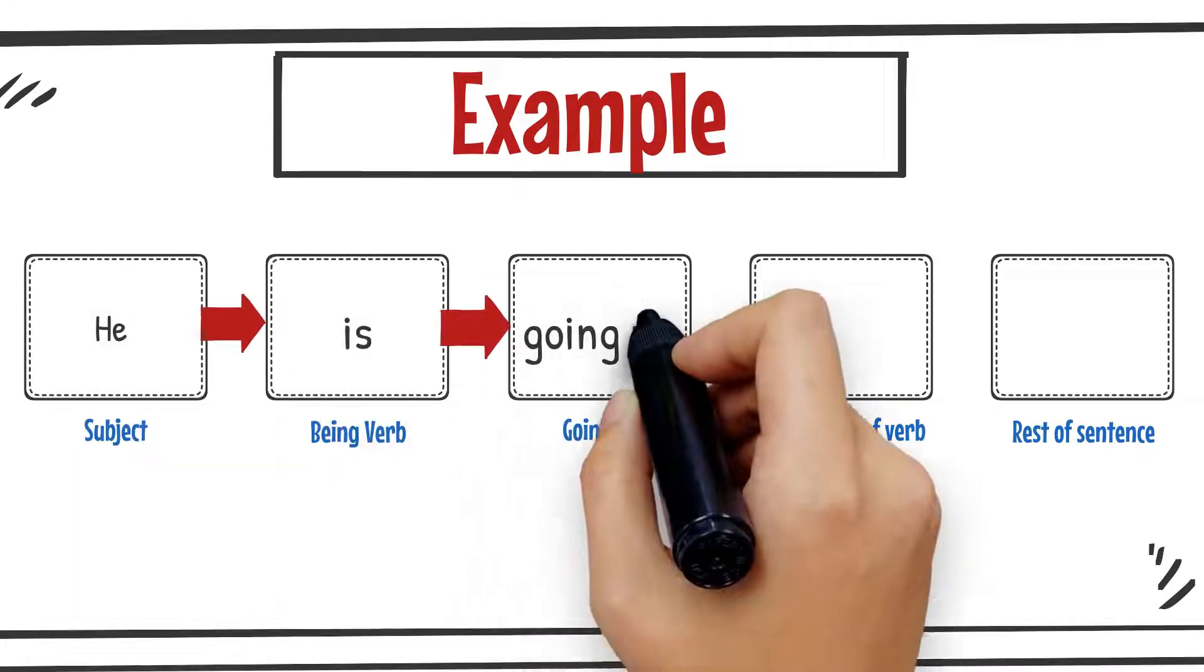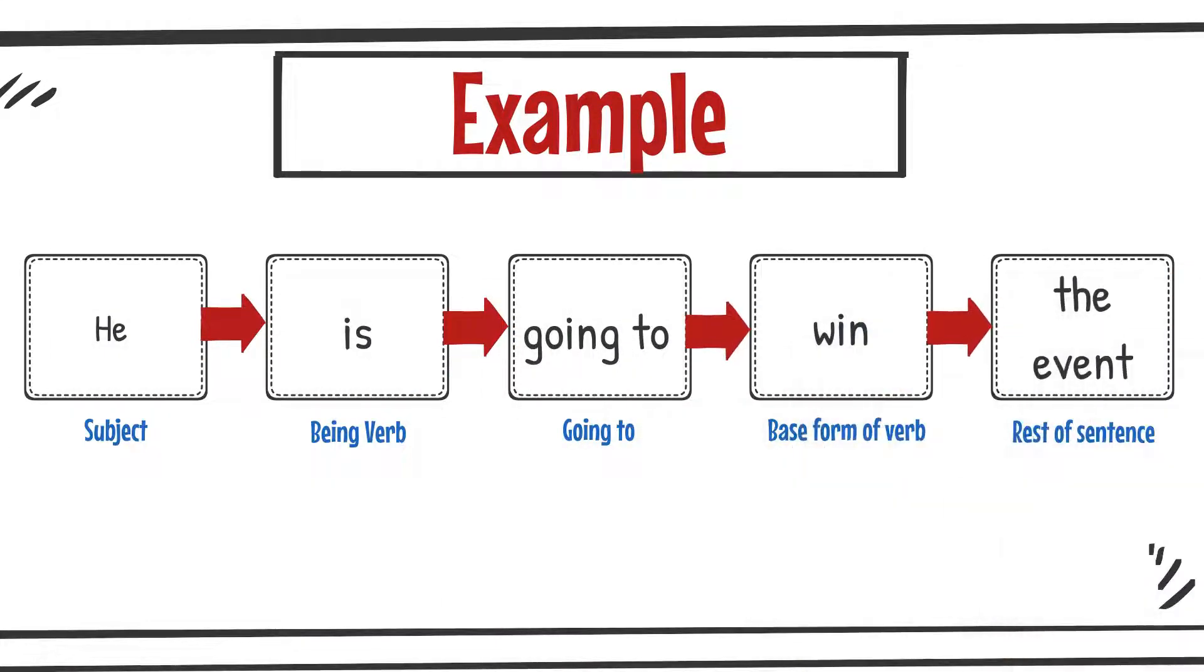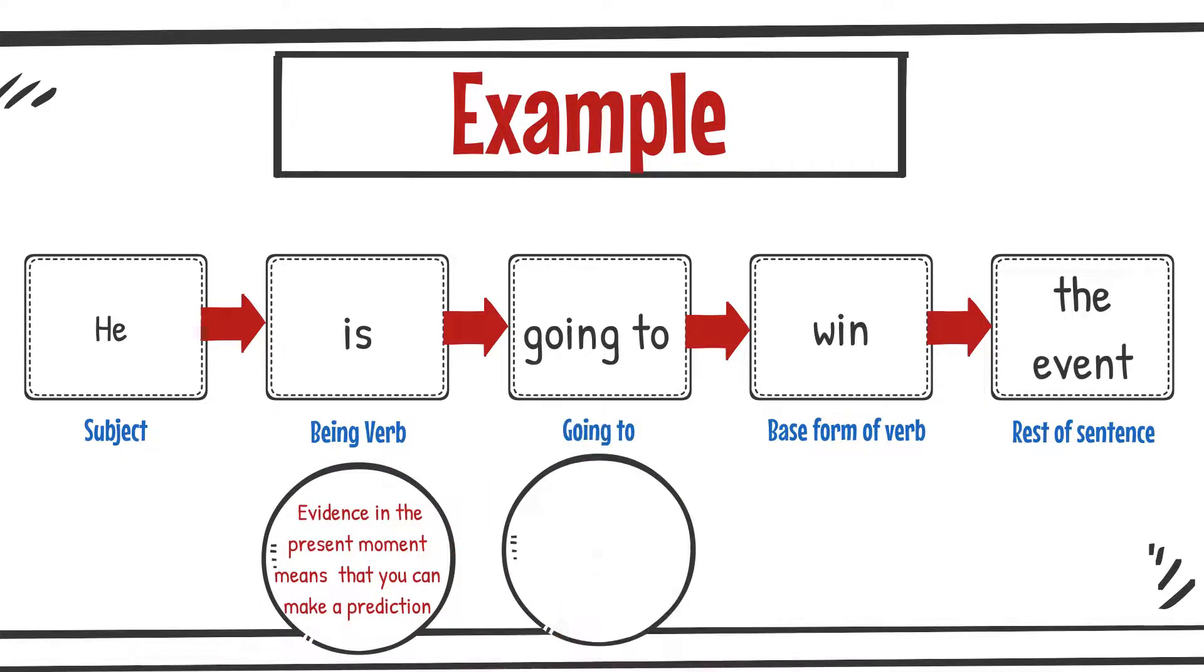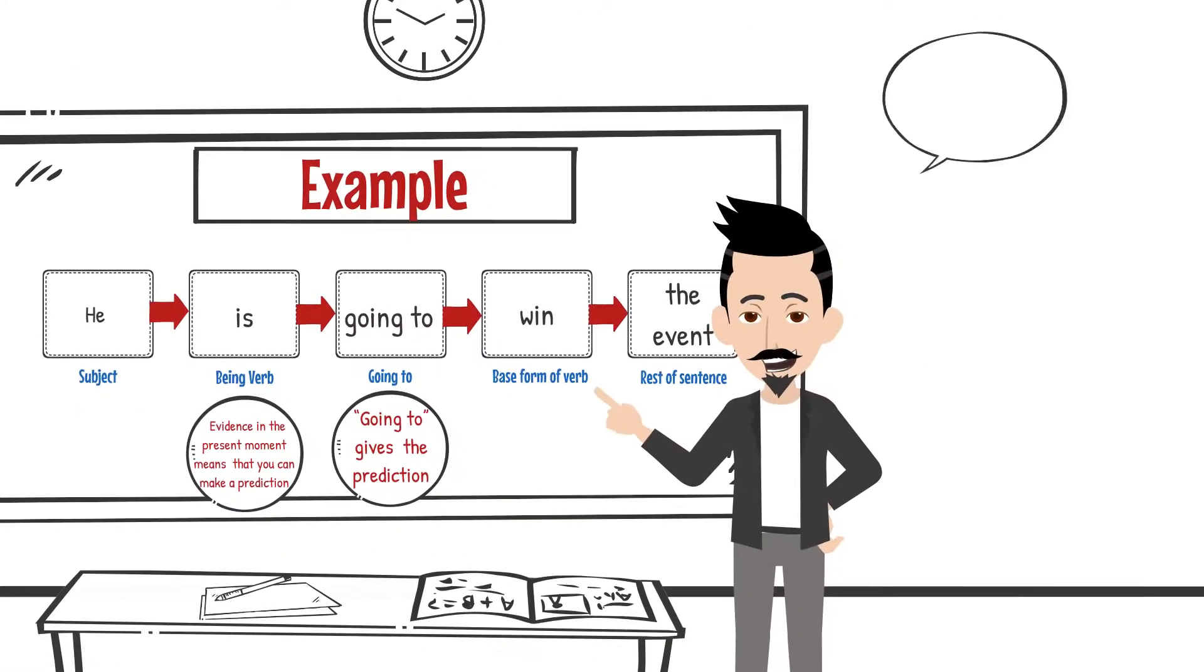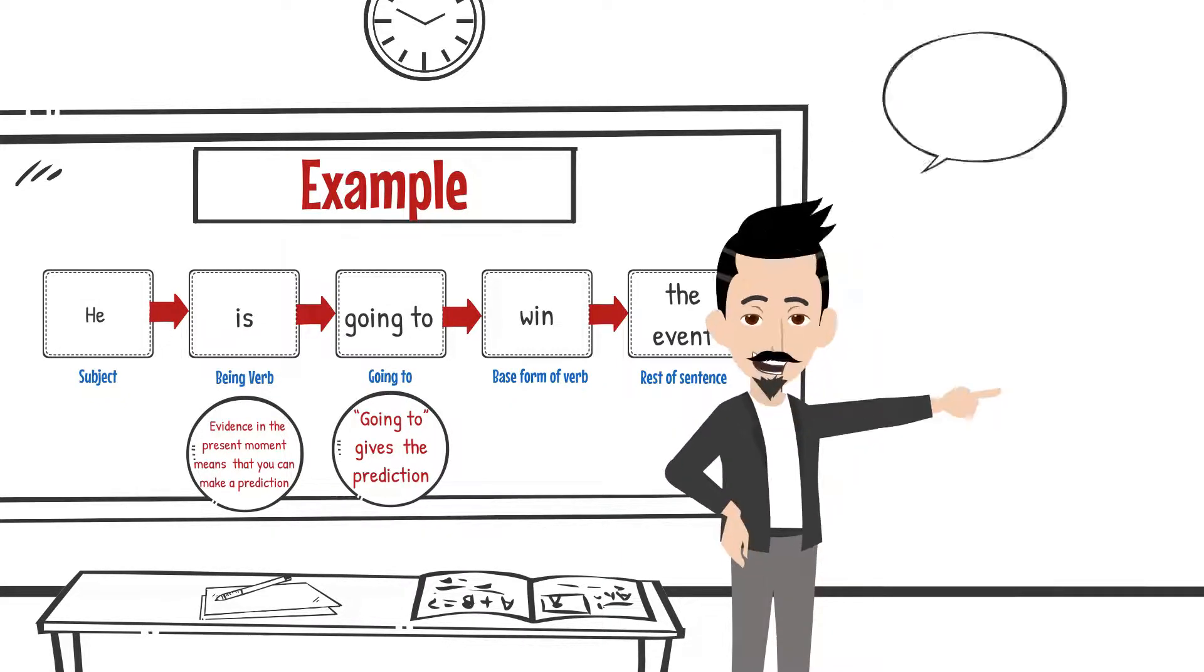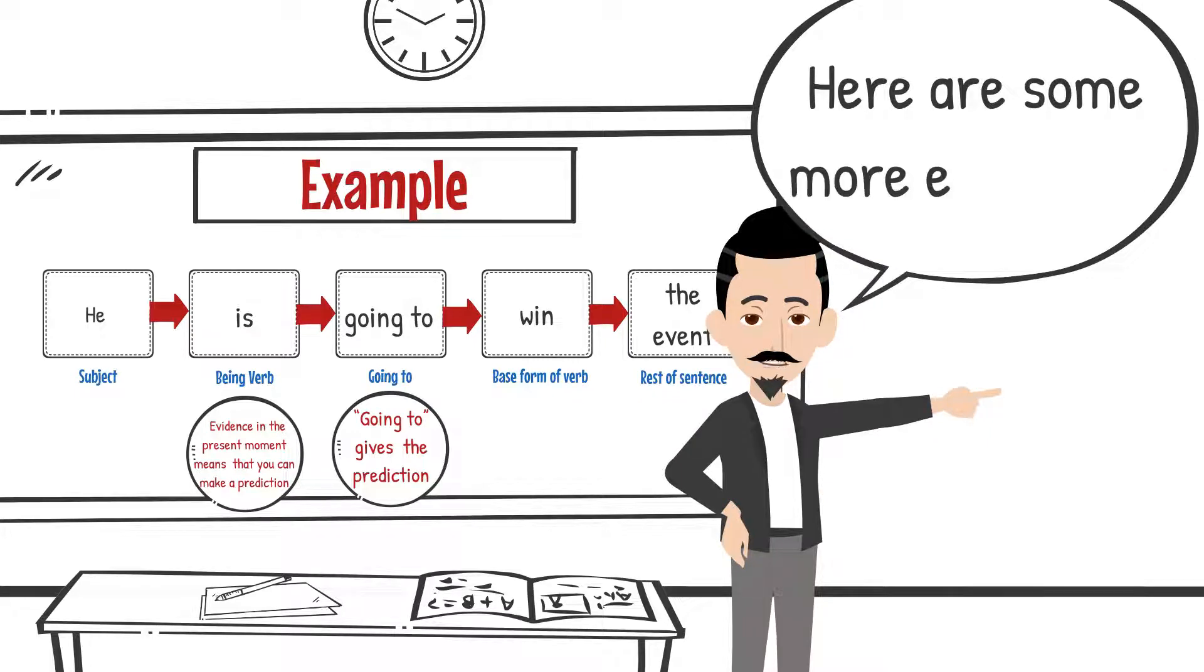He is going to win the event. The sentence is commonly constructed with evidence in the present moment, going to, and the event. Here are some more examples.